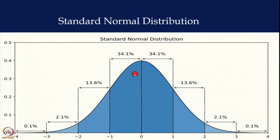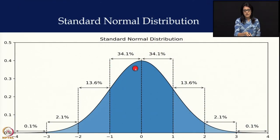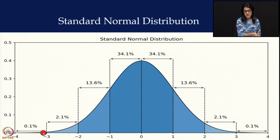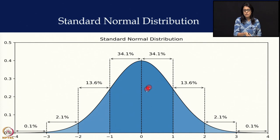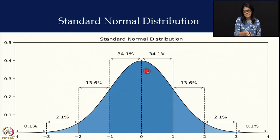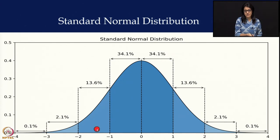This is a bell curve and this is your mean. This is minus 1 standard deviation, this is minus 2 standard deviation, and this is minus 3 standard deviation. Most of your children should fall between minus 2 to plus 2 standard deviation — that is your normal curve.